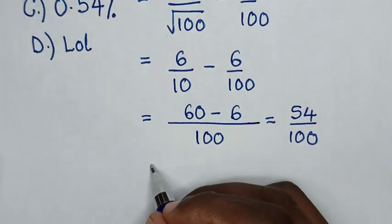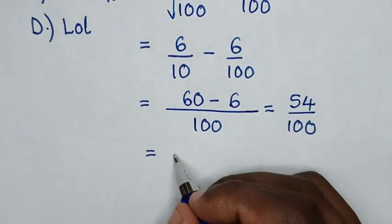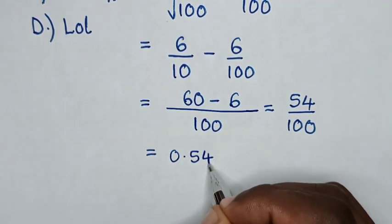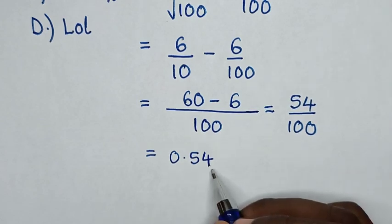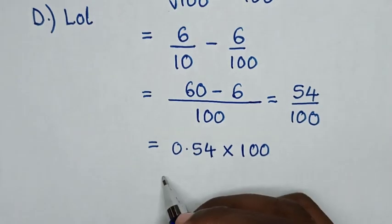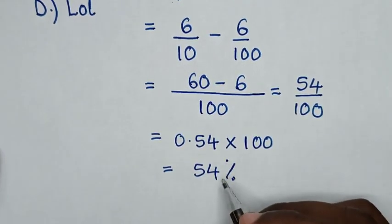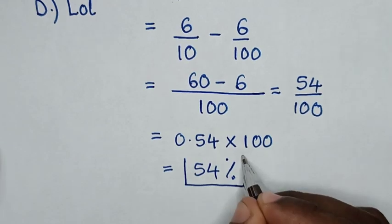Then it equals, we change 54 over 100 into decimal, which is 0.54. Then we change this into percent by multiplying by 100, giving us 54%. This is our final answer.